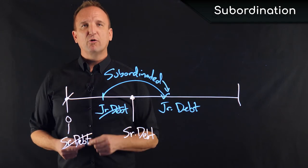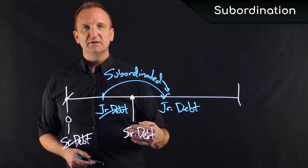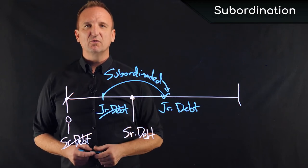So that in the event of foreclosure, the senior debt holder would be paid back first. And then if there are excess funds left over, then that junior debt holder would get paid.